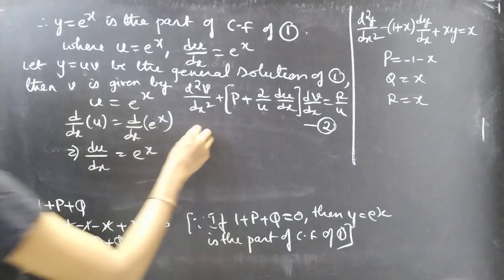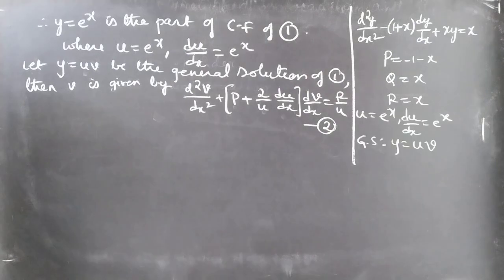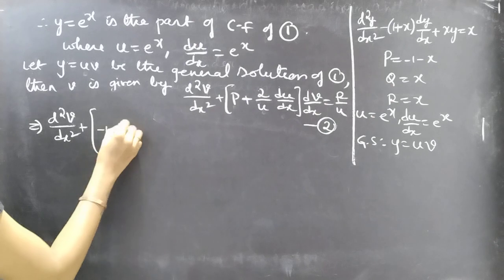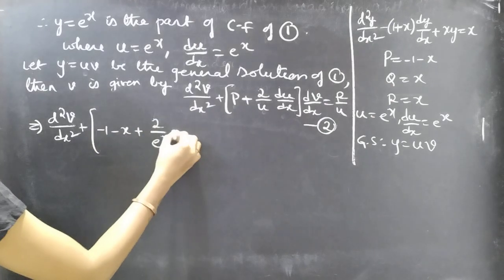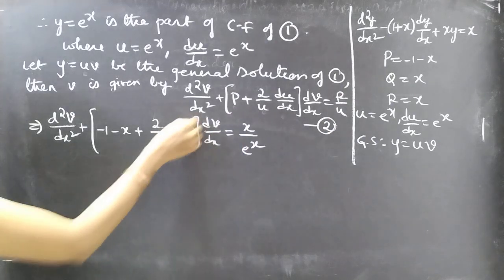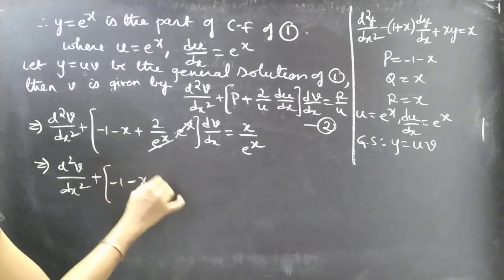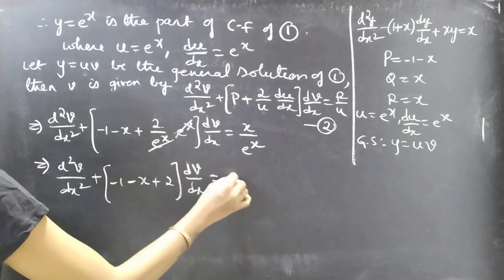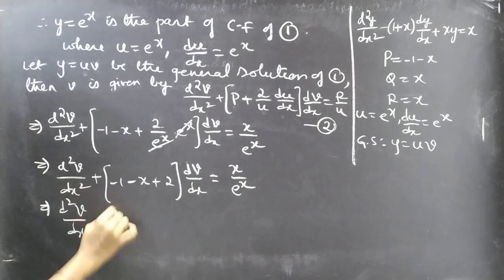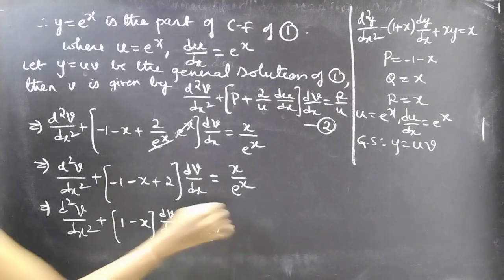Substituting into equation 2: d²V/dx² + [(-1-x) + (2/eˣ)·eˣ]·dV/dx = x/eˣ. The eˣ terms cancel, giving: d²V/dx² + (-1 - x + 2)·dV/dx = x/eˣ. This simplifies to: d²V/dx² + (1 - x)·dV/dx = x/eˣ.